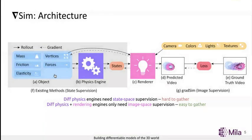In GradSim, we extend a differentiable physics engine and connect it with a differentiable renderer. This renderer takes in states produced by the physics engine and outputs an image or a video sequence.